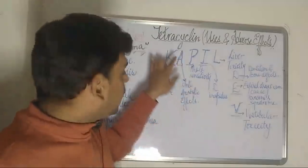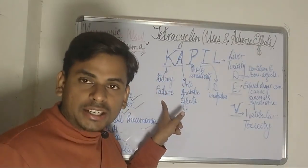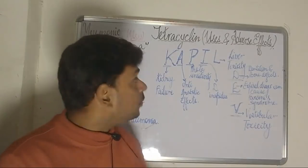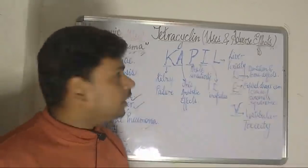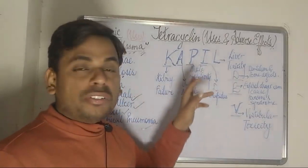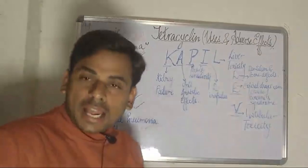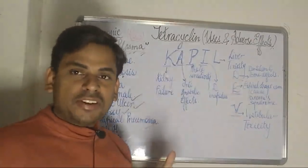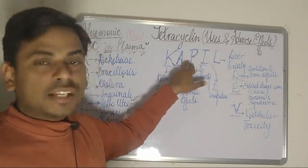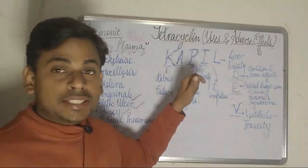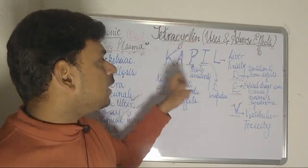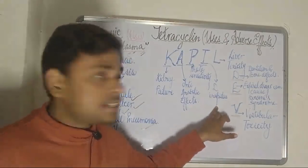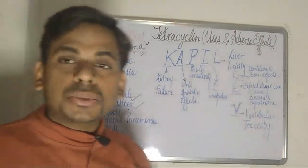Beginning with the K of Kapil Dev — it refers to kidney failure. One of the adverse effects of tetracyclines is kidney failure. Moving on to the A — it is referring to anti-anabolic effects. The P refers to photosensitivity, which is the most commonly seen adverse effect of tetracycline administration. The I refers to diabetes insipidus, and the L refers to liver toxicity.